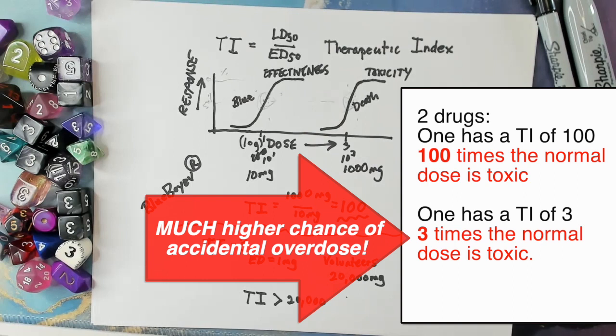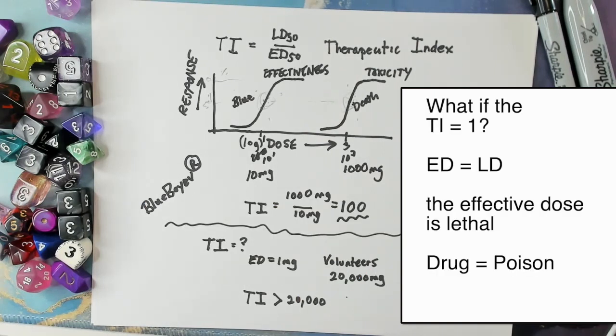If the therapeutic index is very high, it means the patient can take more of the drug — or the blood level can be higher than normal — without great risk from the drug. If the therapeutic index is one, that's a poison, because the effective dose is the deadly dose. So if you are a K-pop enthusiast like me — and who isn't? — I have a mnemonic.